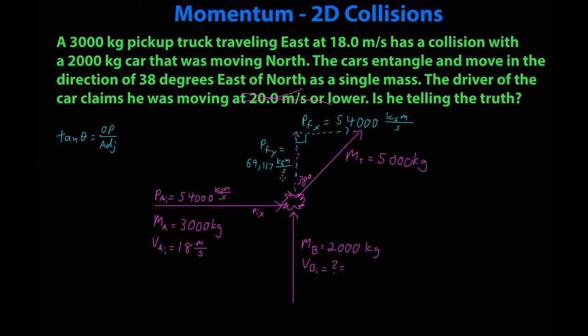So momentum final y is 69,117 kg m/s. And again, these are our momentums. So just on the side while we're here, another question that could be asked is what is the velocity of the combined wreckage? If I have these two sides, I can get momentum total, which is 87,711 kg m/s. Take your momentum divided by the mass, I get velocity final total of 70.5 meters a second at 38 degrees east of north. So this is one possible thing that could be asked for.